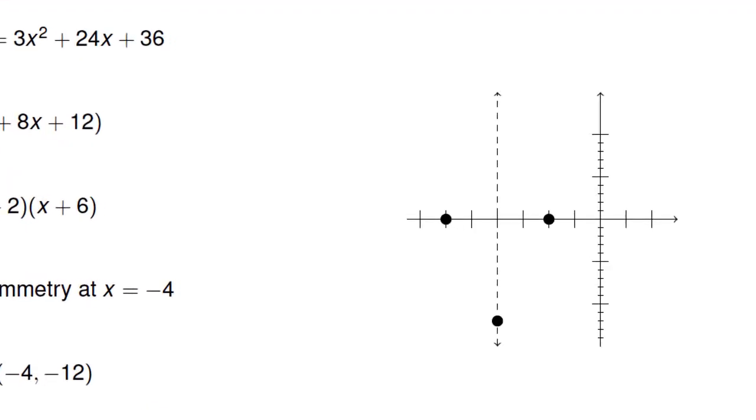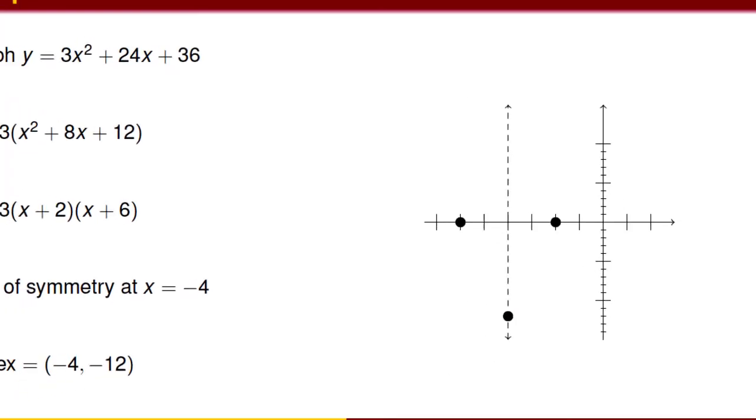We could find two additional points by using the stretch factor. A standard y equals x squared parabola goes left and right 1 from the vertex and up 1. This parabola has a stretch factor of 3, so we go up 3 instead. When we move left and right 1 from the vertex, we should go up 3 to negative 9, so there will be points at negative 5, negative 9, and negative 3, negative 9. We can then sketch the parabola.